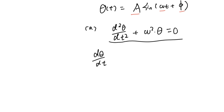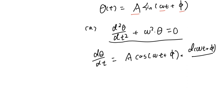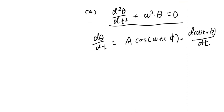To get the second order derivative, we should get the first order derivative first. By the chain rule, it will be equal to A times cosine of (omega t plus phi), times the derivative d(omega t plus phi)/dt.